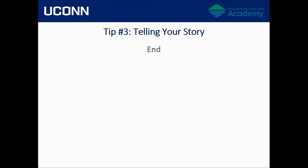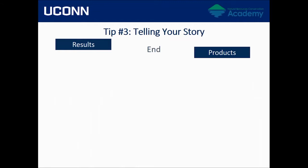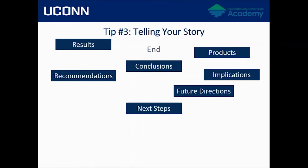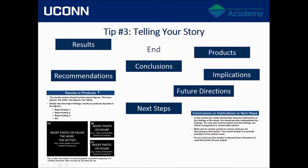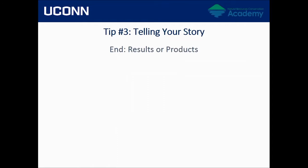For the end, there are typically two sections: results/products/outcomes, and then conclusions/recommendations/future directions/next steps/implications. These two sections wrap up your story. For results or products, the do's include lots of figures — in some cases the section may only have graphs, and that's great. You don't necessarily need text except for figure legends.